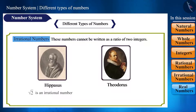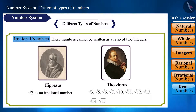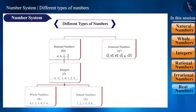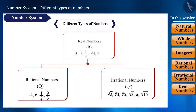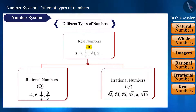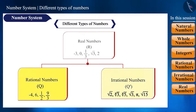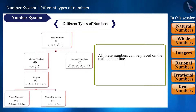After this, Theodorus of Cyrene proved that root 3, 5, 6, 7, 10, 11, 12, 13, 14, 15, and 17 are all irrational numbers. The rational and irrational numbers combine to form real numbers, which are represented by the symbol R. Under real numbers there are only two types of numbers — rational and irrational. Since all these numbers can be represented on the number line, we call them real numbers, and that number line is called the real number line.